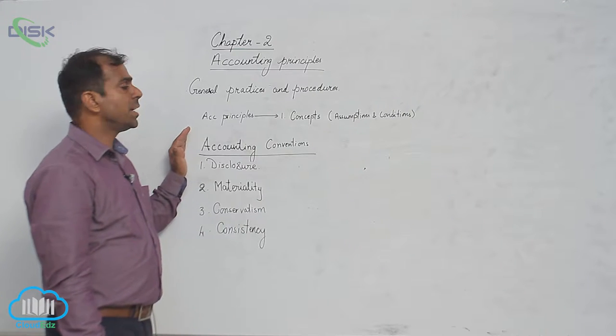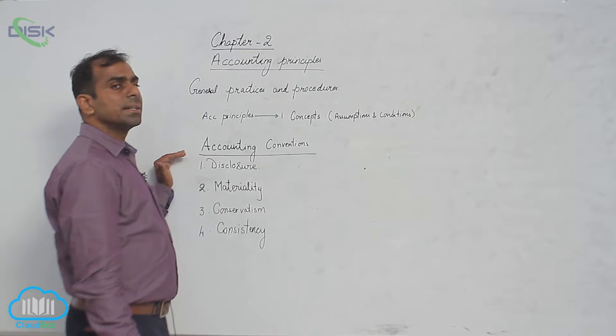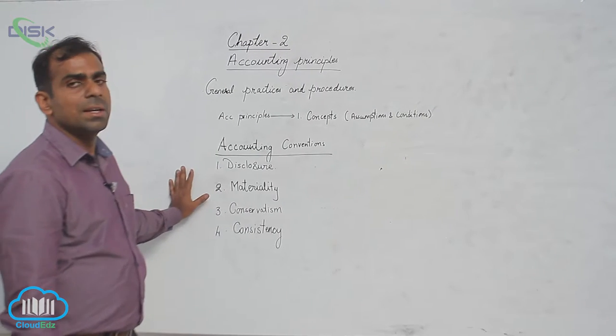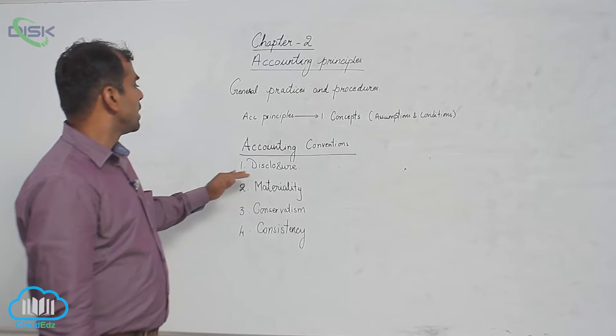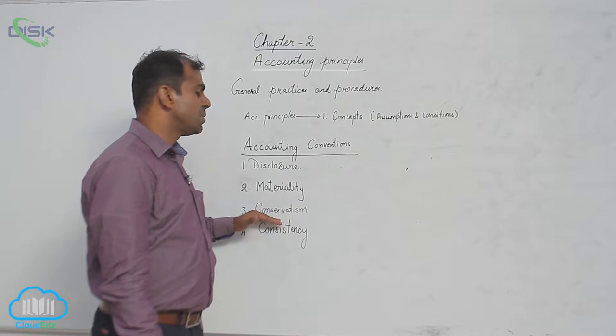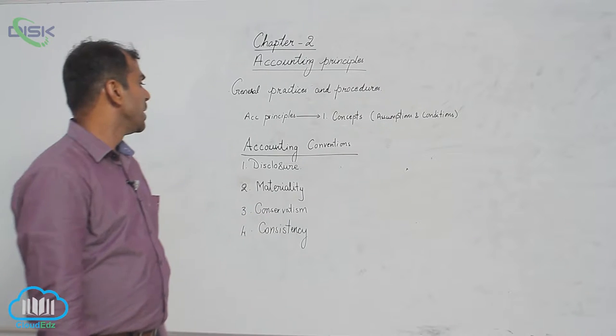Having discussed the accounting concepts, let us move on to the accounting conventions. We are going to discuss the four important accounting conventions: convention of disclosure, convention of materiality, convention of conservatism, and convention of consistency.